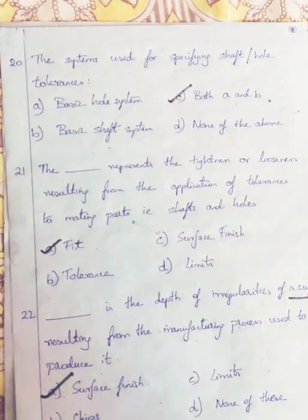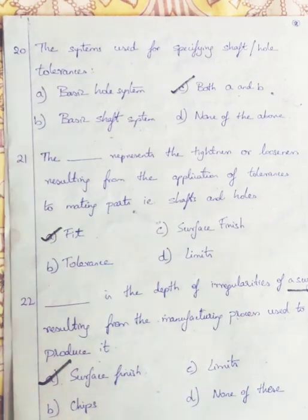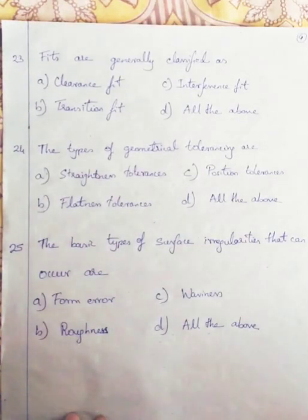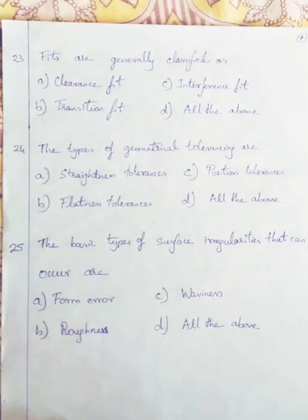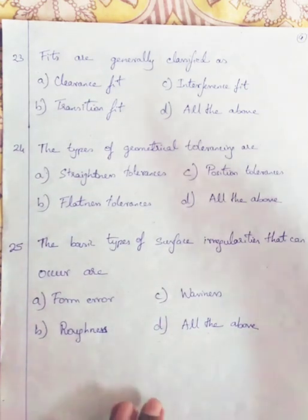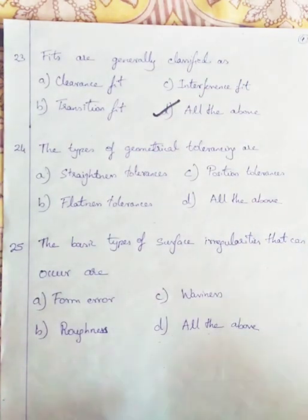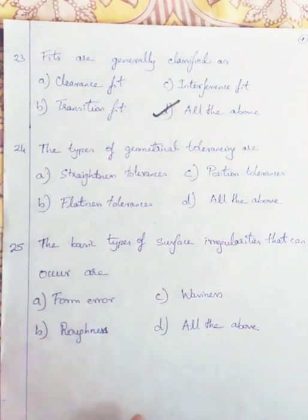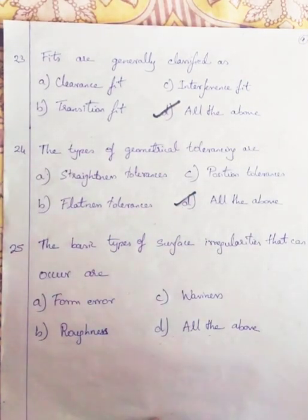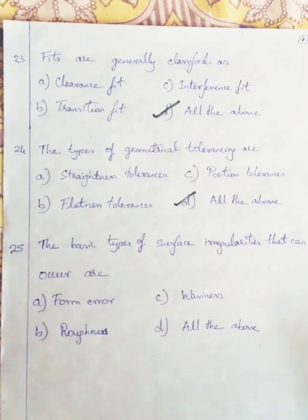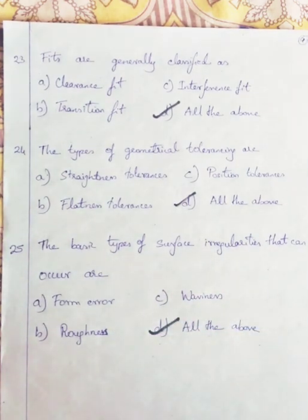Question 23: The fits are generally classified as clearance fit, transition fit, and interference fit — all three types, so we go with all of these. Question 24: The types of geometrical tolerancing are straightness tolerancing, position tolerancing, and flatness tolerance — all are there, so we go with all of the above. The basic types of surface irregularities that can occur are form error, roughness, and waviness — all types, so all of the above.